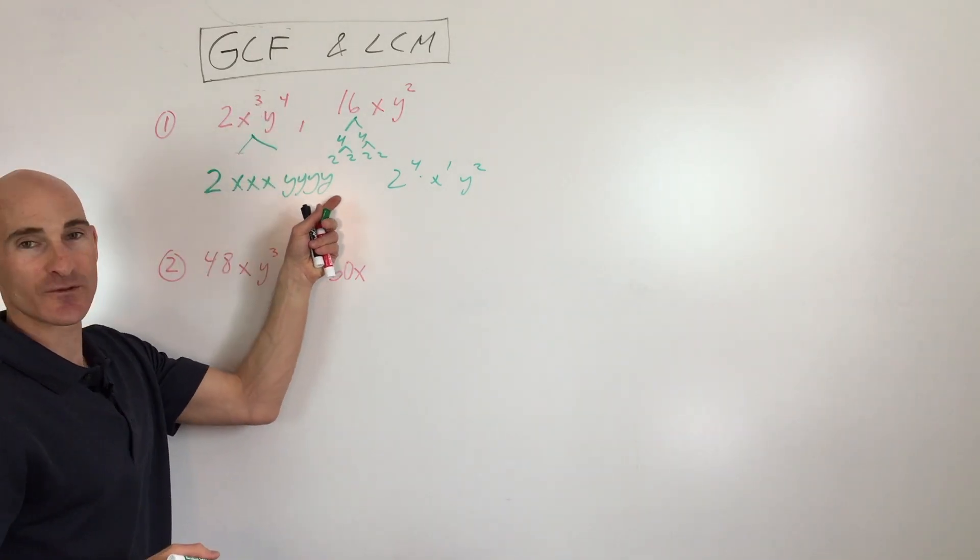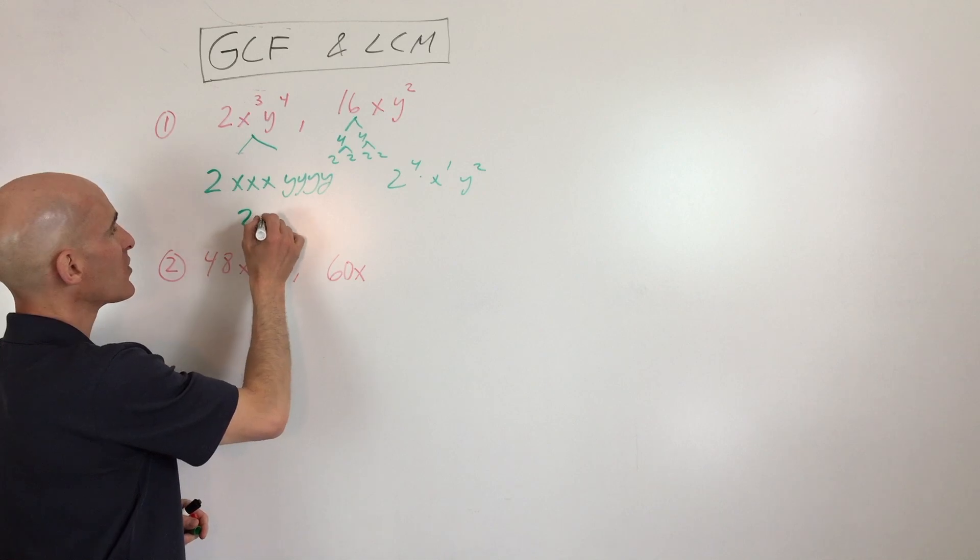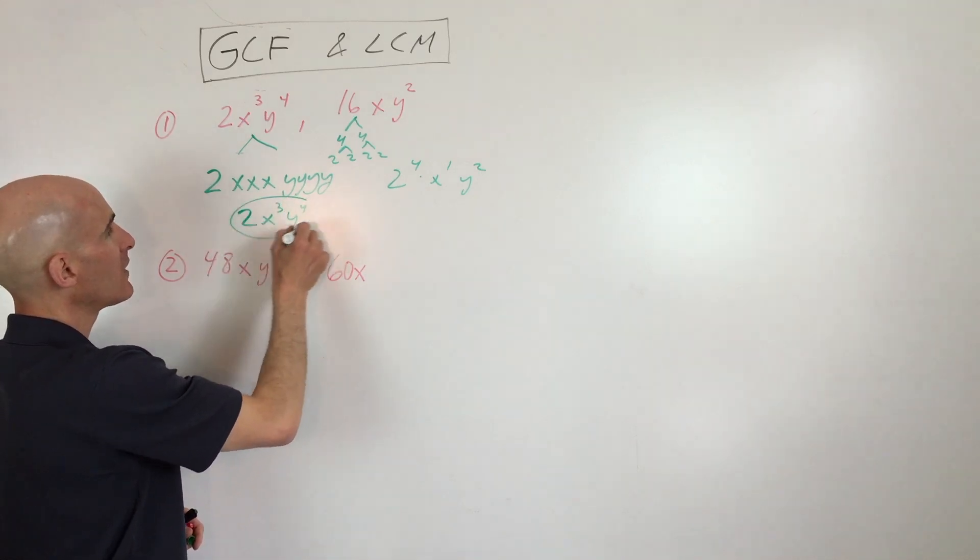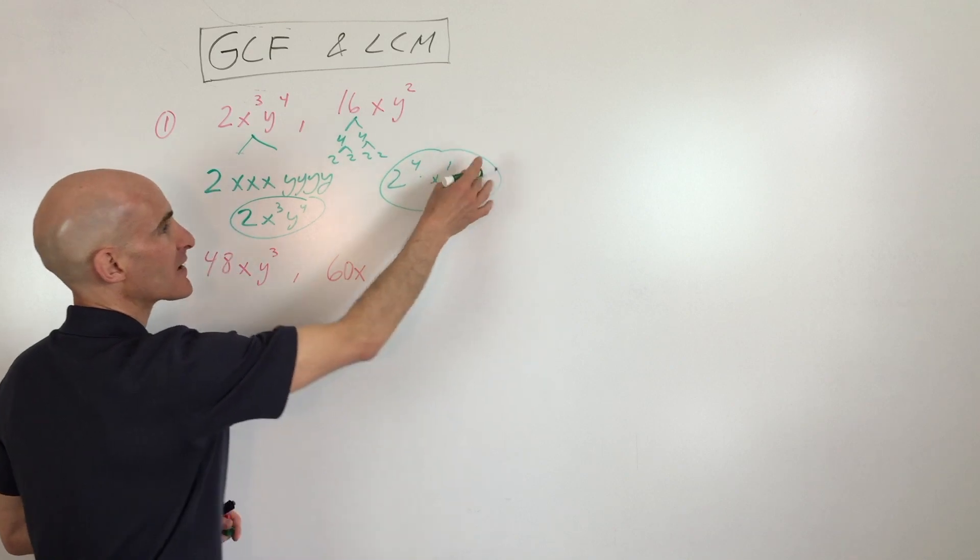Just to show you that x³, there's 3 x's, 4 y's. But I would normally just write this as 2x³y⁴ and 2⁴xy².